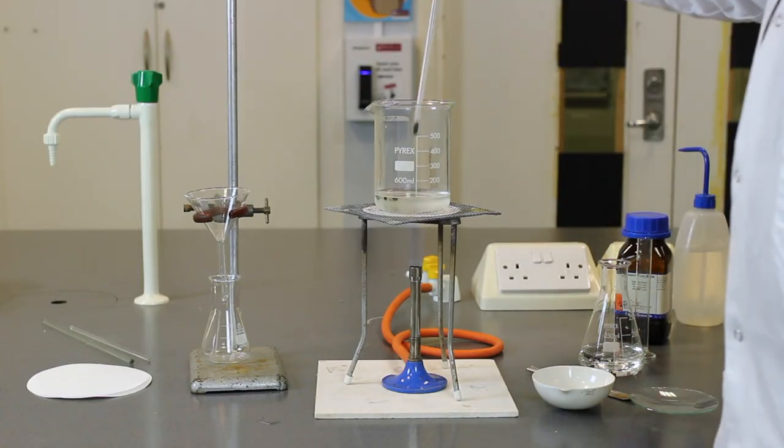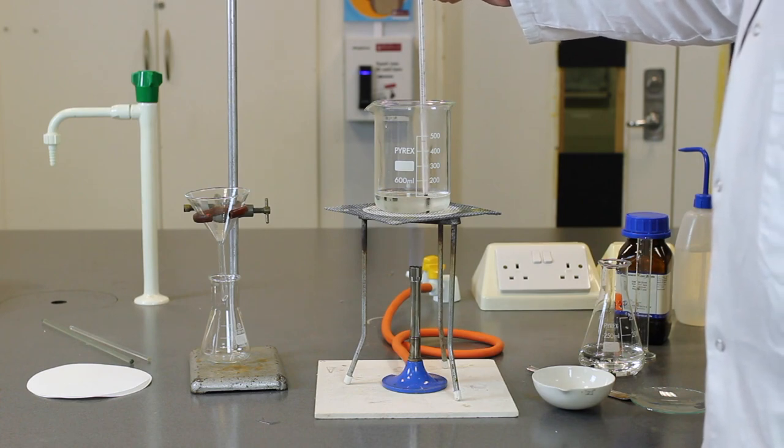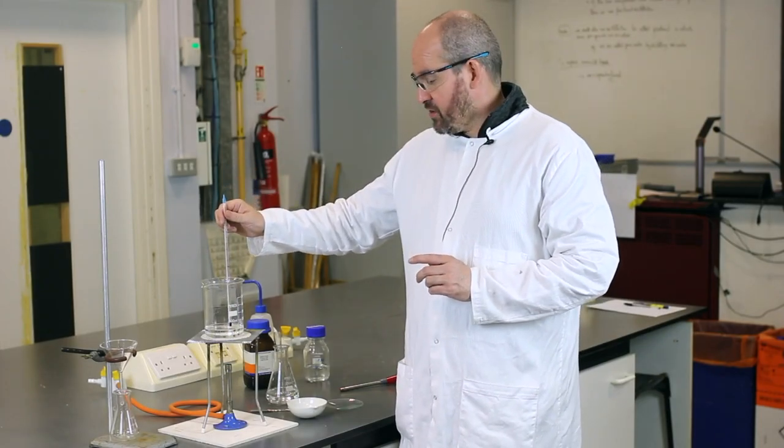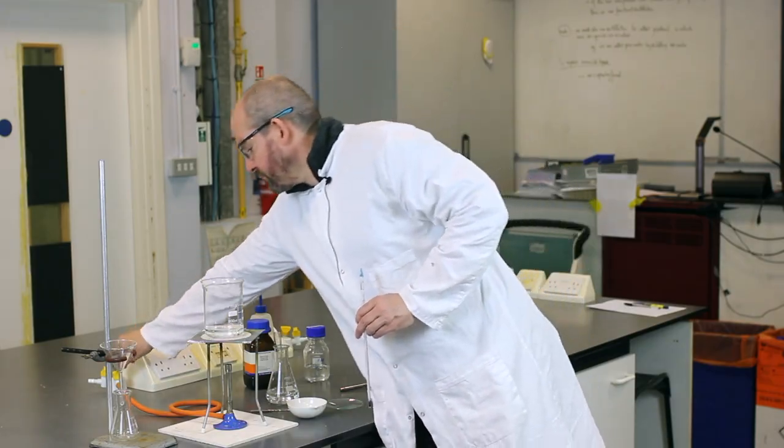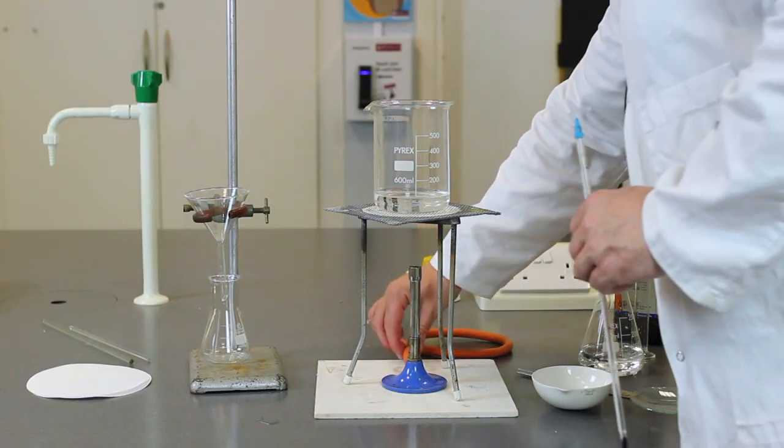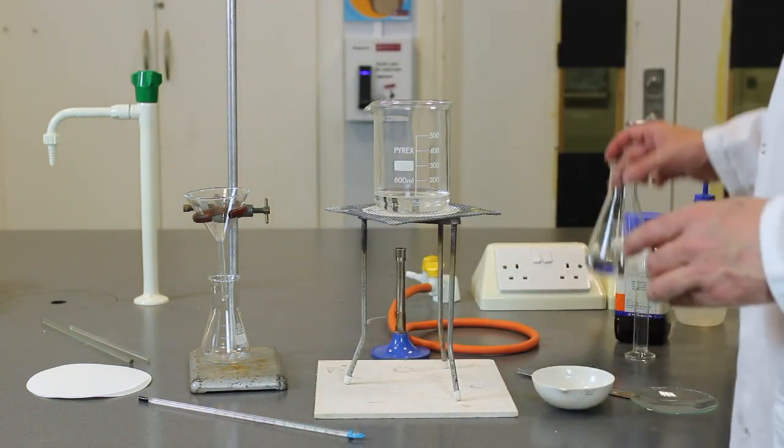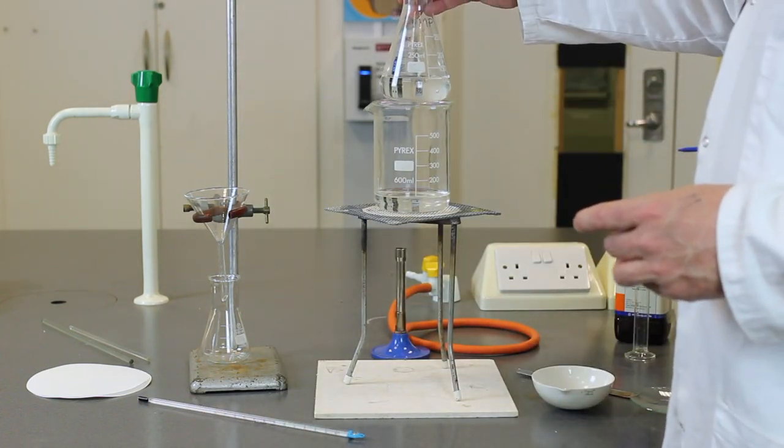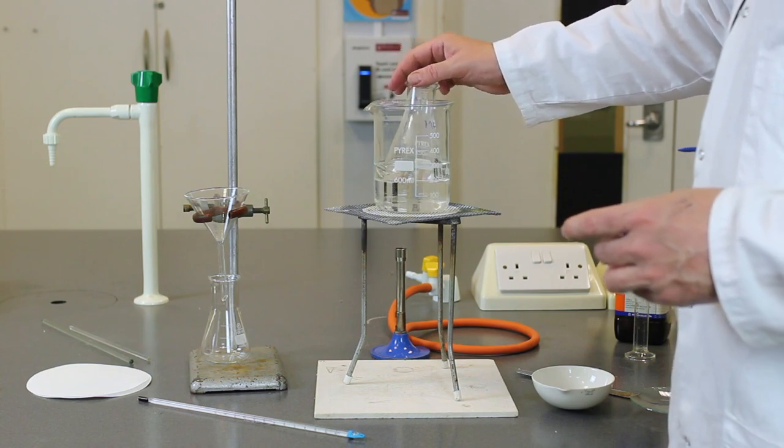So you can use a thermometer like this one here to measure the temperature as it heats. So I'll just put that in. The temperature now above 50 degrees Celsius. So the next stage is to turn the Bunsen off, and we're now going to place the sulphuric acid solution into the water bath. And we're going to leave that a few minutes so that the acid is at the right temperature.